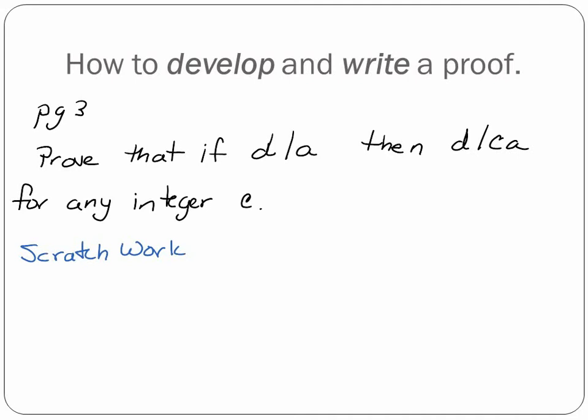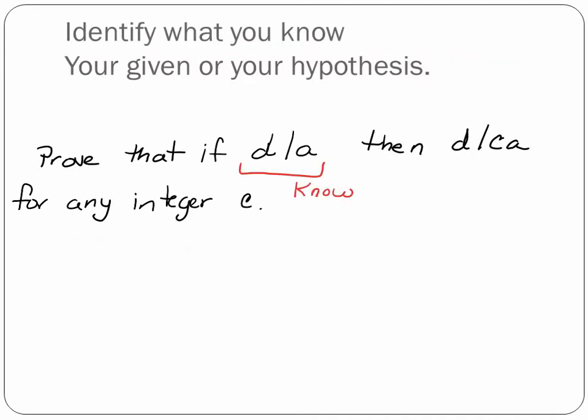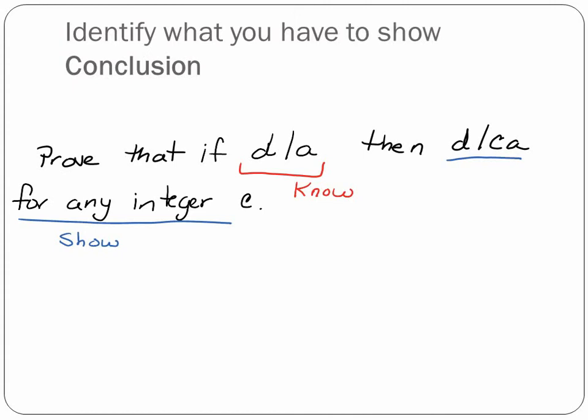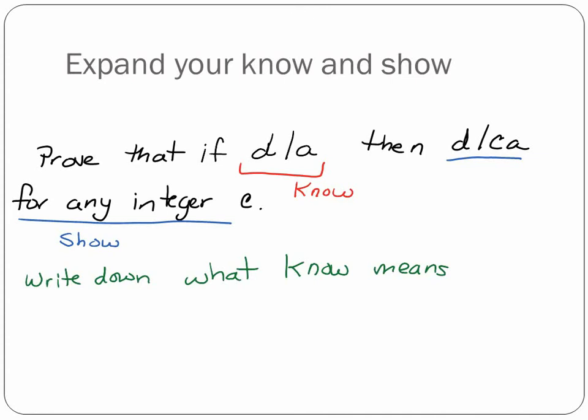So the first step is to take the words between if and then and that's your know. So what's your know? d divides a. That's right. See how easy it is? That's your know. And what does that mean? Well, that's my show, by the way. I can see that. Those are the two easiest things to see. So I'm going to write what that know means.